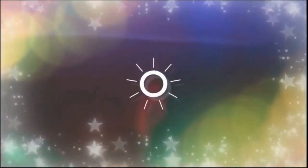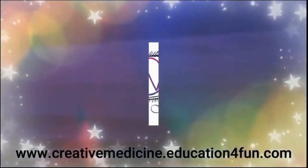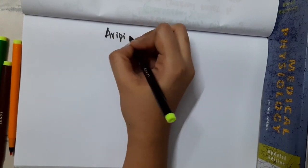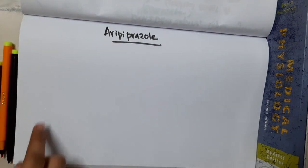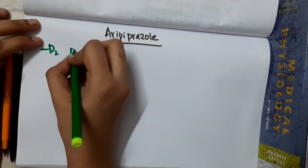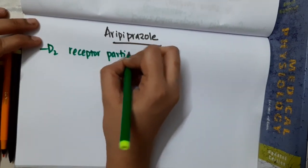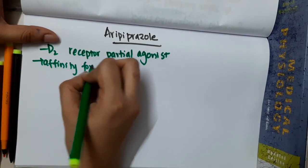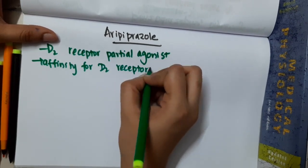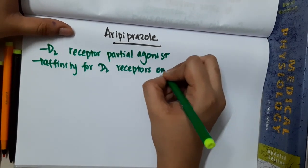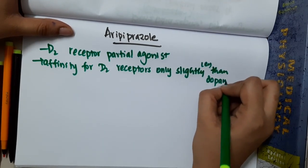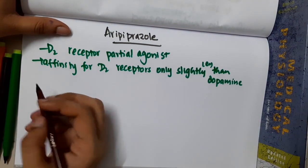Hello friends, welcome to Creative Medicine. In this lecture we will learn about aripiprazole. Aripiprazole is a D2 receptor partial agonist. It has affinity for D2 receptors, but slightly less than dopamine itself.